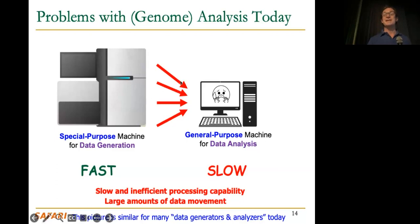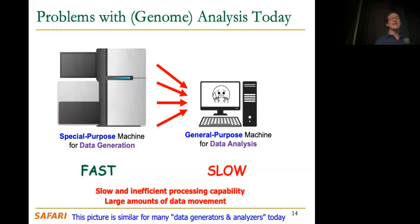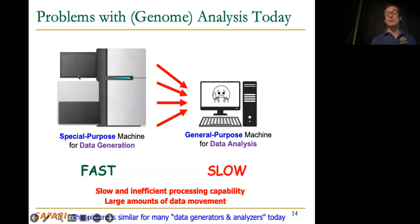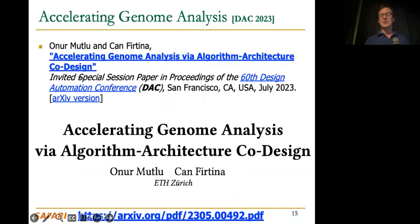We need to change this picture so that data movement is minimized as much as possible and processing capability is balanced. That's the core of memory-centric or data-centric computation — you need to do the data analysis close to where the data is generated and in a way that's specialized to the application that's going to use that data.